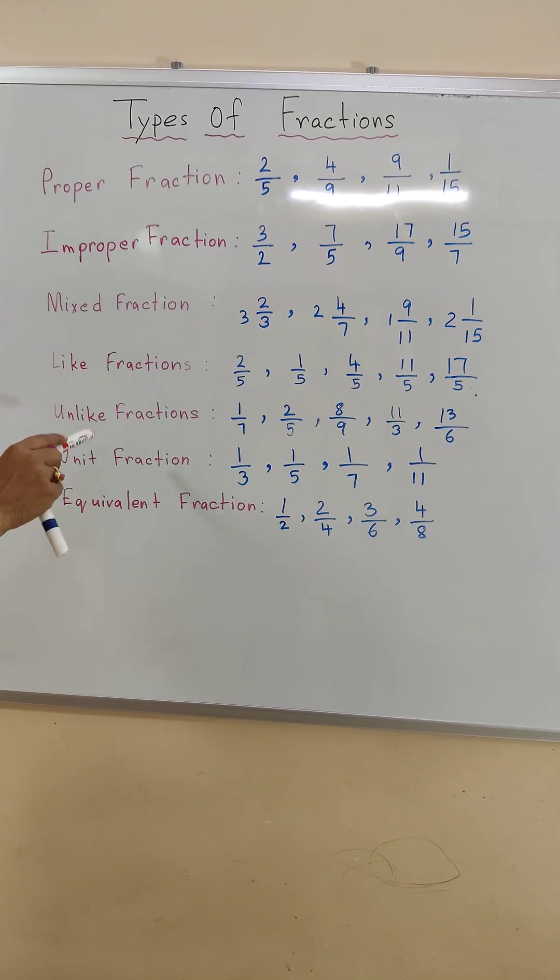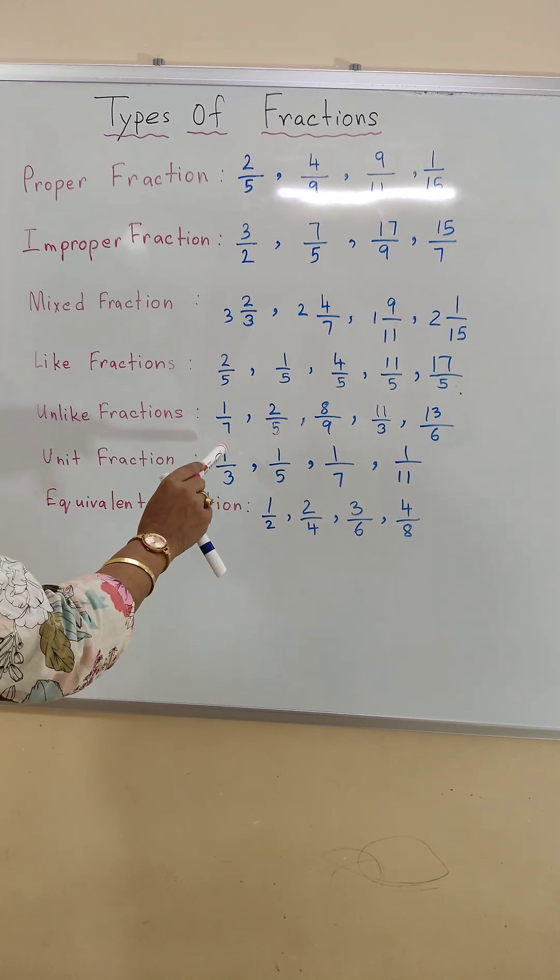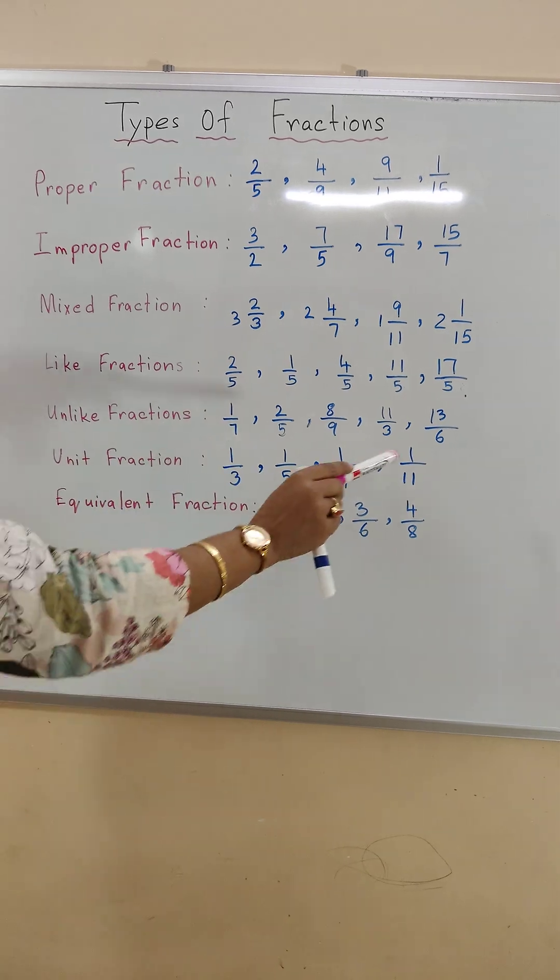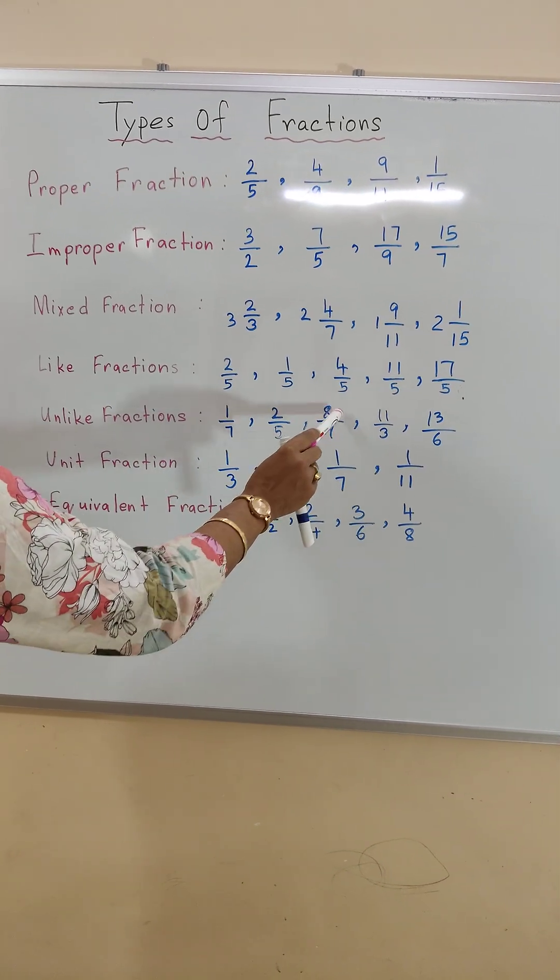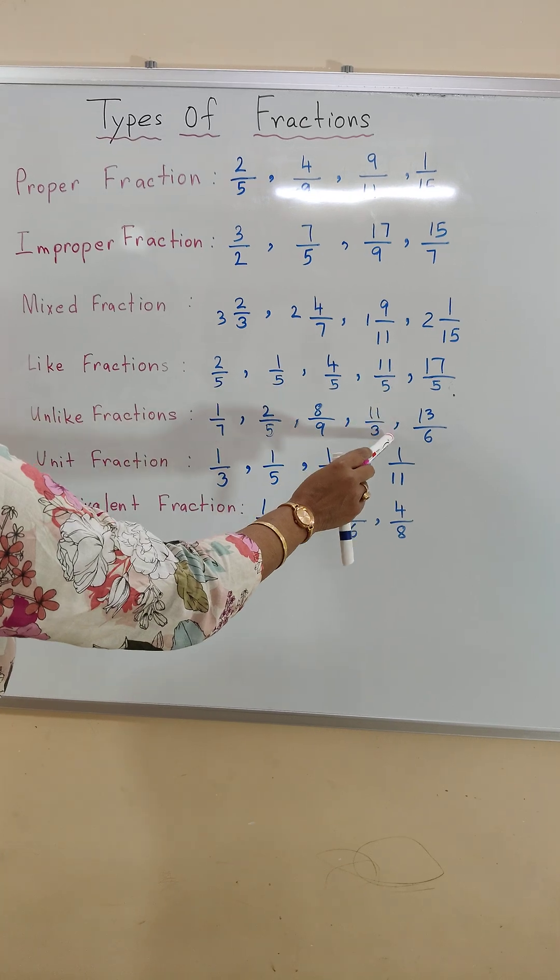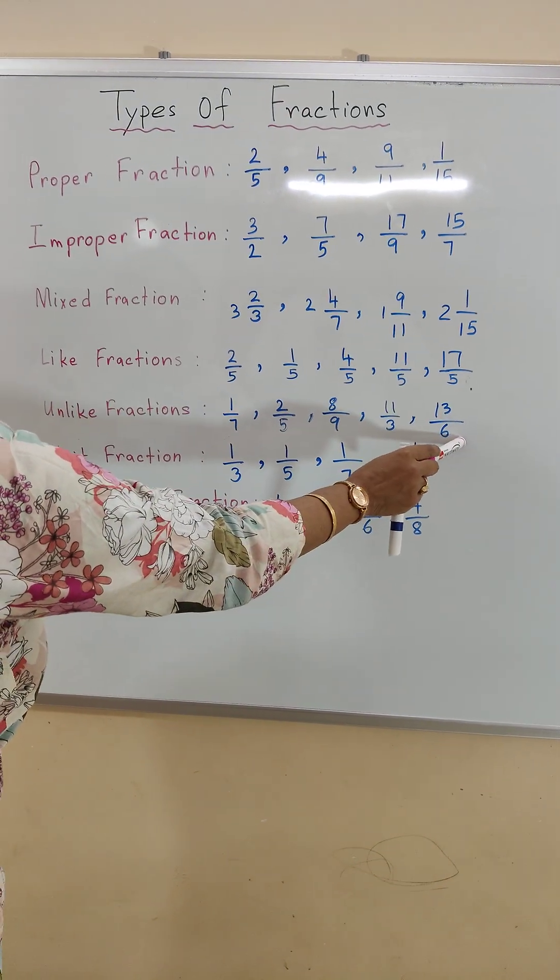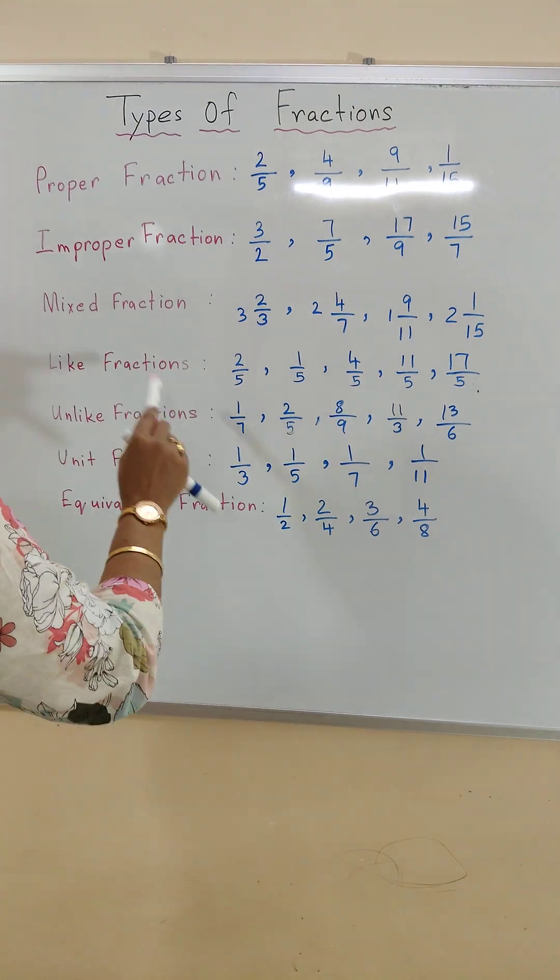Number five, unlike fractions. In unlike fractions, we see all the denominators are different. So those fractions are called unlike fractions. 1 by 7, 2 by 5, 8 by 9, 11 by 3, 13 by 6. See, all the denominators are different. So these are the examples of unlike fractions.